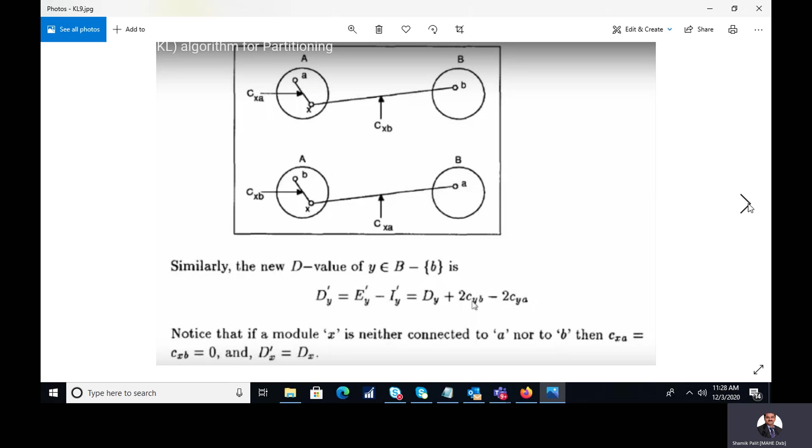One thing we always have to keep in mind over here that x is connected to the node A and B. So in case x is not connected to A and B, so obviously the value of Cxa and Cxb will be 0.